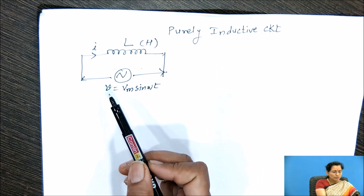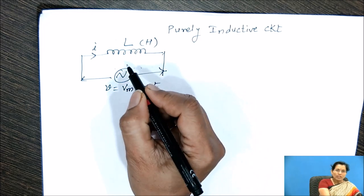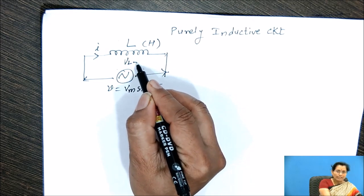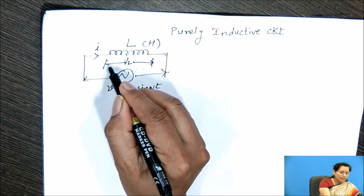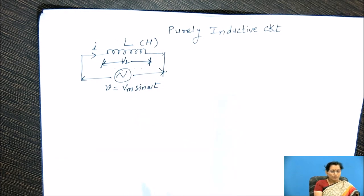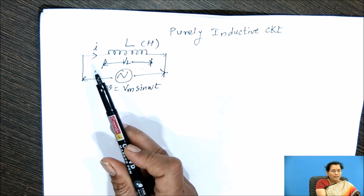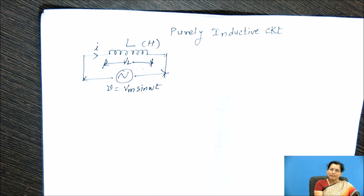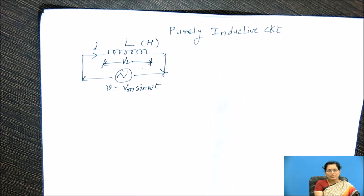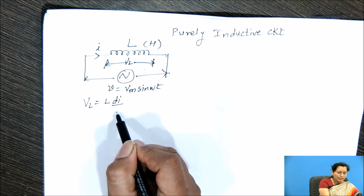To discuss about the relation between this voltage and the voltage drop across this inductor, we are going to indicate that voltage drop across this inductor as VL. This VL is the inductive voltage drop across this pure inductance. This inductance is the property which opposes change in current. Due to this AC voltage, the current changes through this coil and the self-induced EMF will be developed across this inductor, and that self-induced EMF is given by VL equal to L dI/dT.